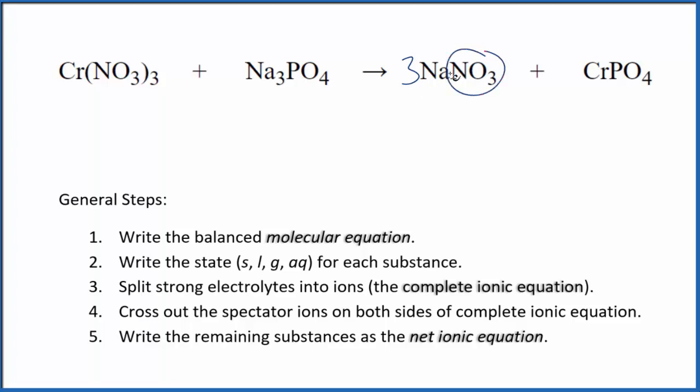Sodiums are balanced, now I have three nitrates, but I have three nitrates over here, so that's good. I have one chromium and then one phosphate on each side. So that's it. This is the balanced molecular equation.